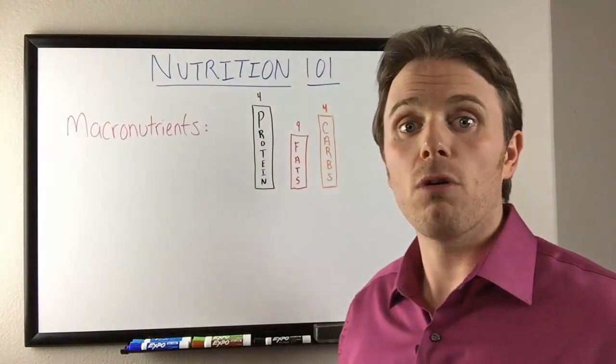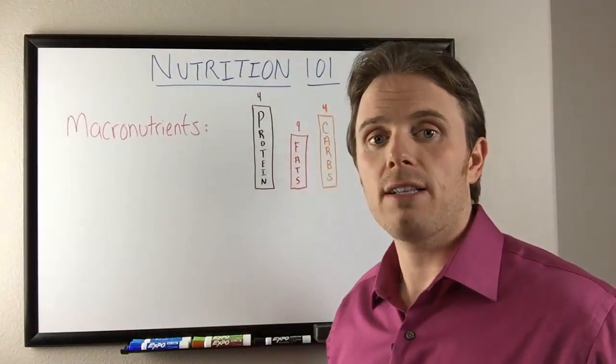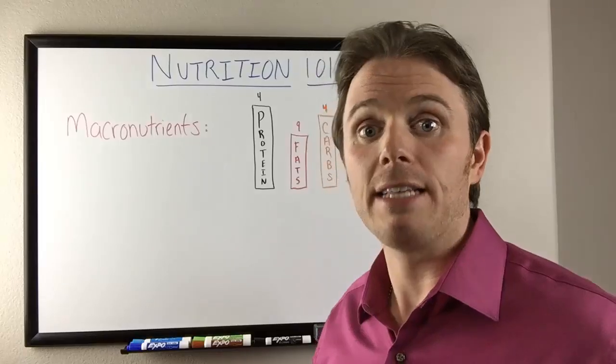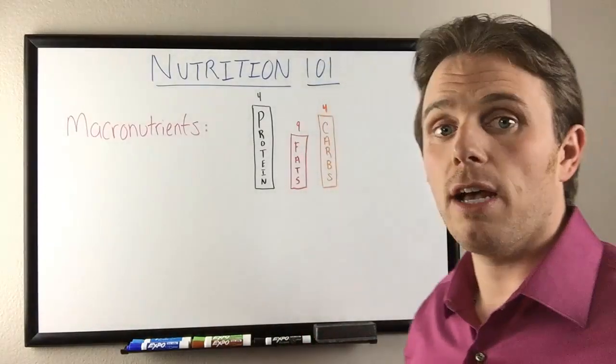But what we come to find is that the hormonal effects of each one of these macronutrients is far different. When we have protein, we have more of a hormonal effect of glucagon. We have fats, we have more of a hormonal effect of peptide YY and ketones, which are appetite suppressant. And then the carbohydrate, we have more insulin.